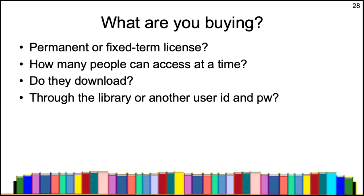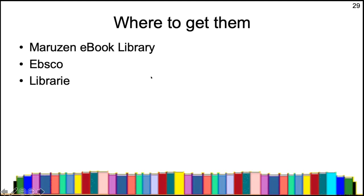There are also different limits on how many people can read a book at a time. With a physical book, obviously only one person can borrow it. Sometimes with ebooks there may be a limit — it could be one person or five people. Some books are downloadable, so students can download the book and then nobody is reading it in real time. Another issue is how students access the books — through the library's system, or with a separate user ID and password.